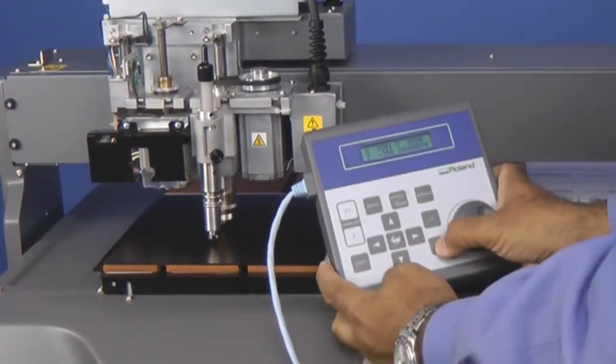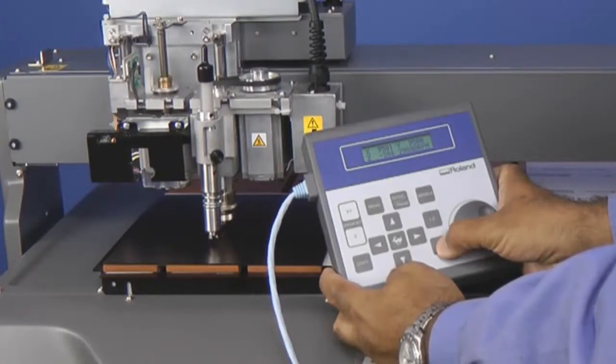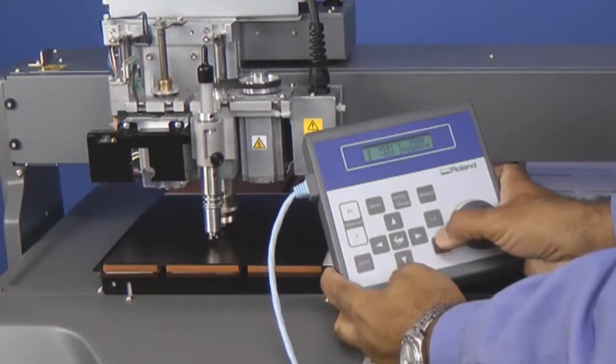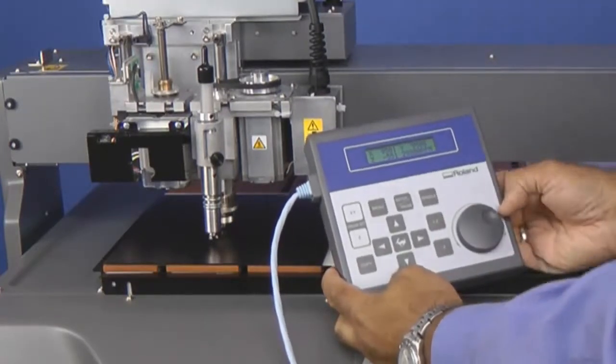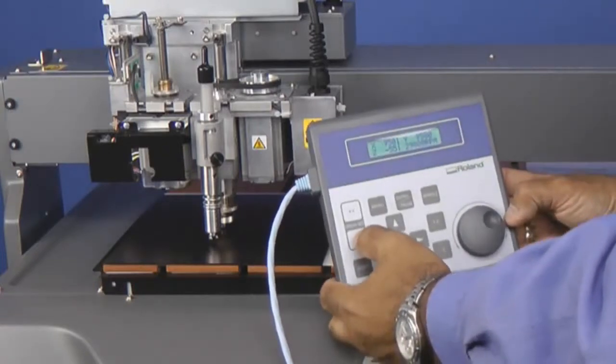So we want to go ahead and compress the spring as you see here. When we press the Z minus key, you'll see the spring compress slightly.